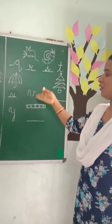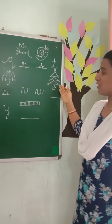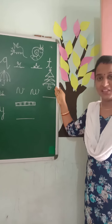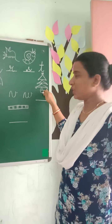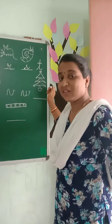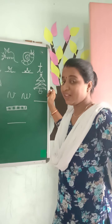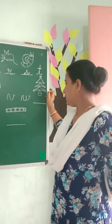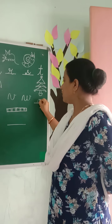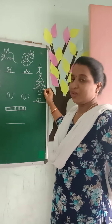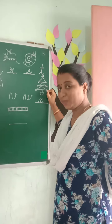Then U is followed by V, then W. There is a picture here — which picture is this? It is a tree. This tree is called a Christmas tree. Christmas tree starts from which letter? X. X for Christmas tree.